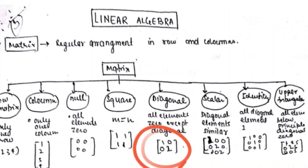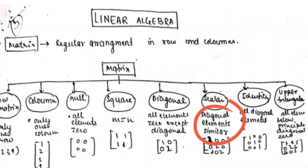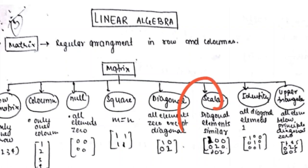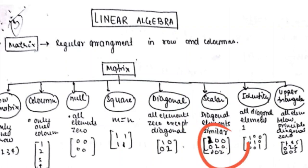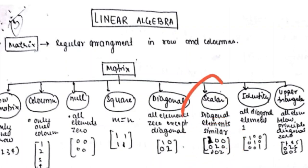A scalar matrix is a modification of the diagonal matrix in which all the diagonal elements are the same, and all elements other than the diagonal must be zero. That particular matrix is known as a scalar matrix.